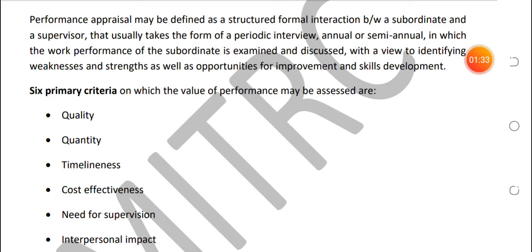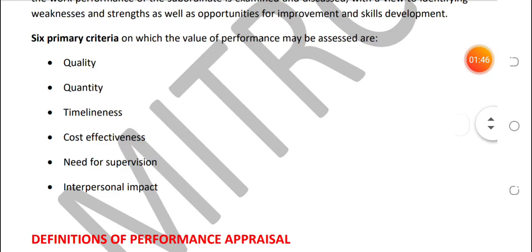Basically, Performance Appraisal ek formal interaction hai superior aur subordinate ke beech mein jo ki every year end mein hota hai, jismein superior subordinate ko uski poore saal bhar ki performance ke baare mein feedback deta hai. There are six primary criteria on which the value of performance may be assessed — subordinate ki performance basically six criteria ke base par judge aur examine ki jaati hai.